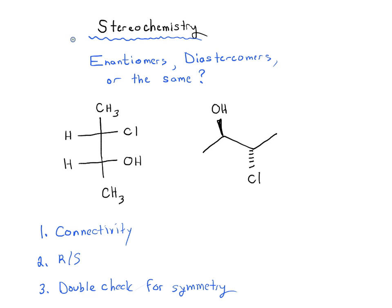First, let's look at the connectivity of each of these two molecules to make sure the connectivity is the same. One, two, three, four — we've got four carbons; carbon two is attached to a chlorine, carbon three is attached to an OH. This is a Fisher projection, which is another reason why it would be time-consuming to try and superimpose these two molecules. On the molecule on the right, carbon two has a chlorine, carbon three has an OH, carbon four has CH3. The connectivity is the same, so these are not constitutional isomers — they are isomers of some kind, or possibly the same.